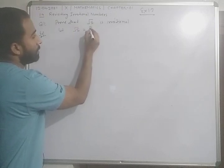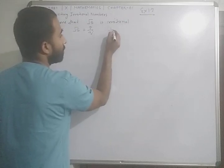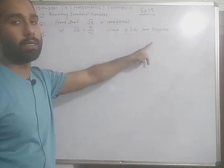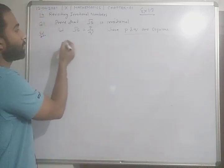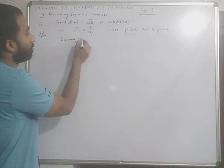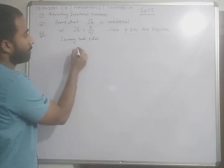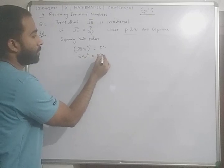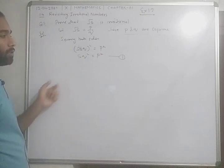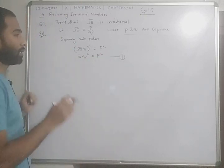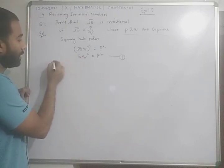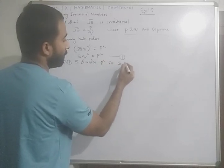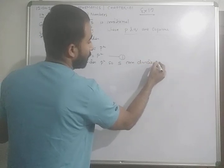In the solution, let under root 5 be rational, equal to P by Q, where P and Q are co-primes. This is a very important part — you must write this information in your solution. Now, squaring both sides, we get root 5 times Q whole square equal to P squared, then 5Q squared equal to P squared. You can consider this as equation 1. Using Theorem 1.3: in equation 1, 5 divides P squared, so 5 can also divide P.